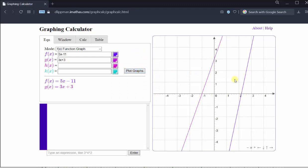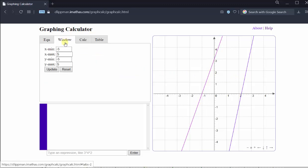Because we cannot see the point of intersection, we now need to adjust the window. We can adjust the window manually by clicking on the window tab and changing the max and mins for both x and y. Or we can try zooming out by clicking on the minus in the lower right-hand corner of the graph, which is here. Let's try this.